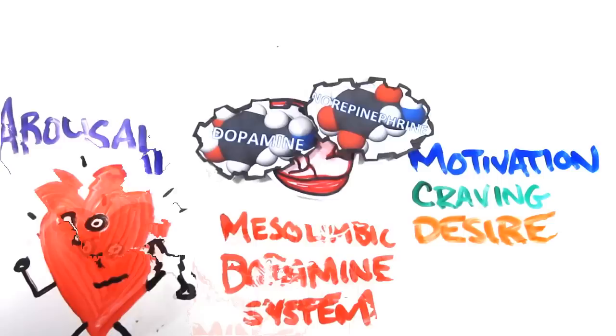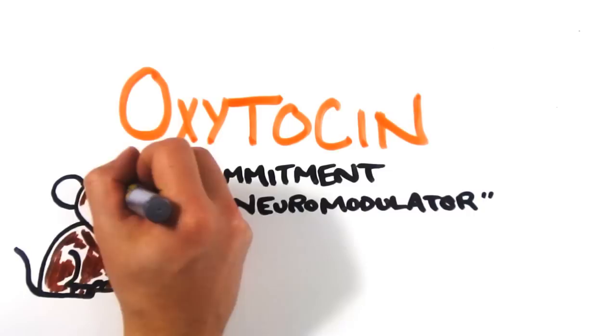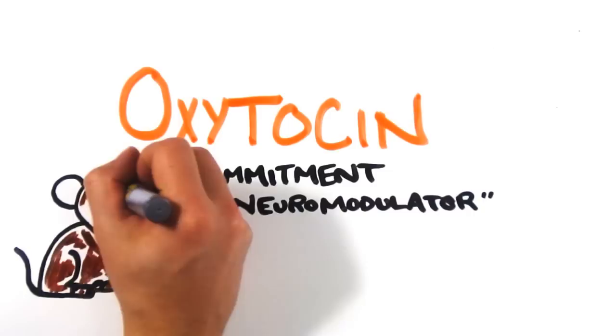We also see a surge in the neuromodulator oxytocin from the nucleus accumbens, sometimes called the commitment neuromodulator because in mammals it helps to reinforce bonding or attachment. When prairie voles are injected with either oxytocin or vasopressin, they'll instantly find a mate to pair bond with.